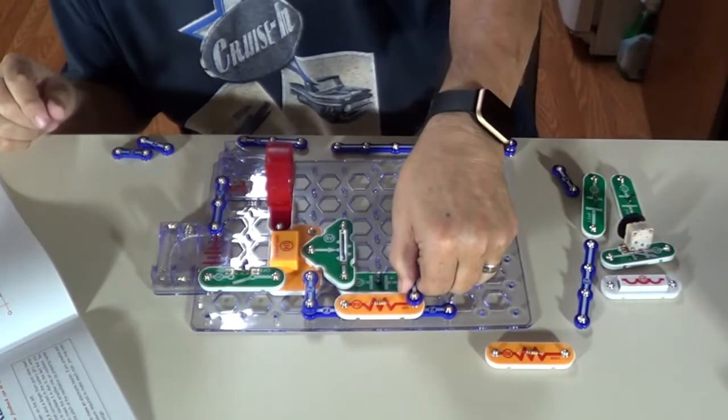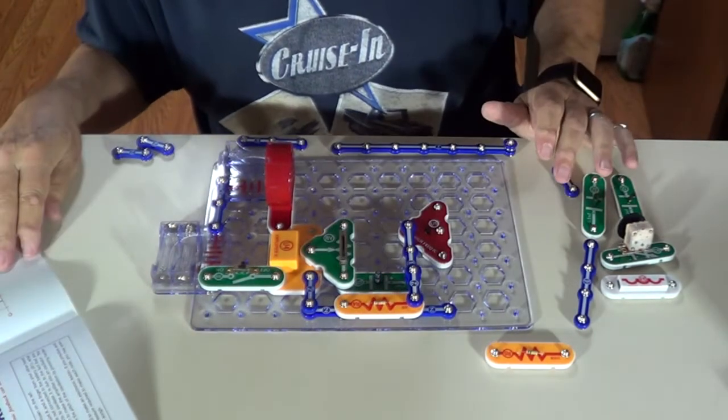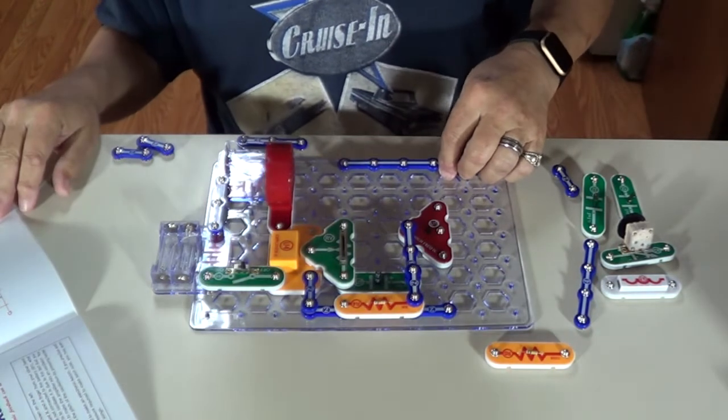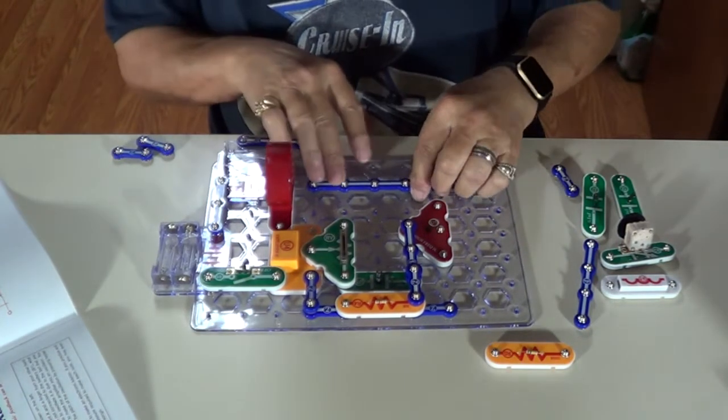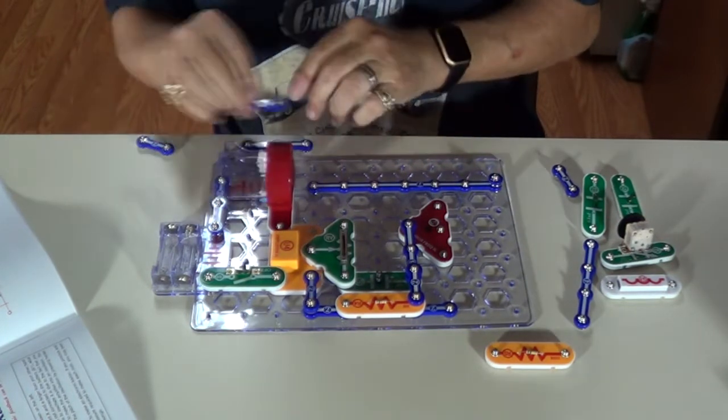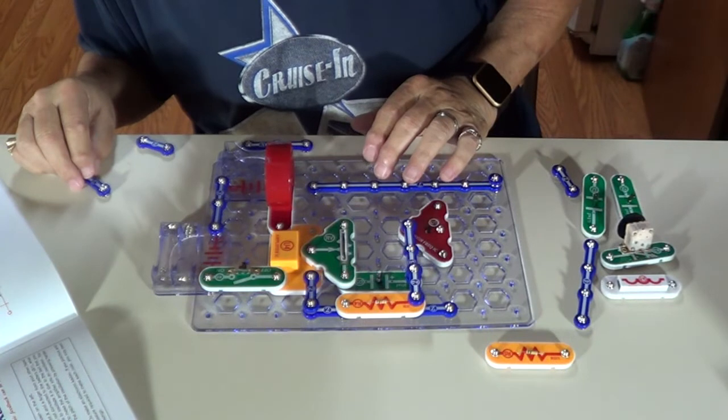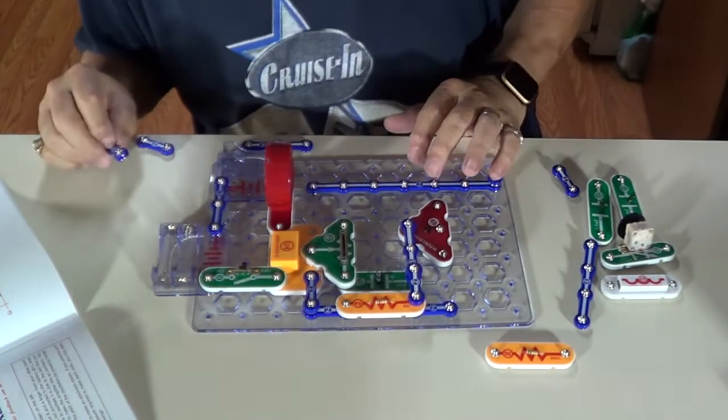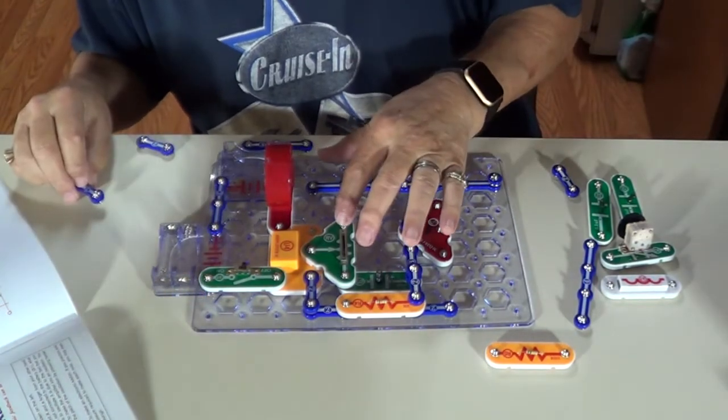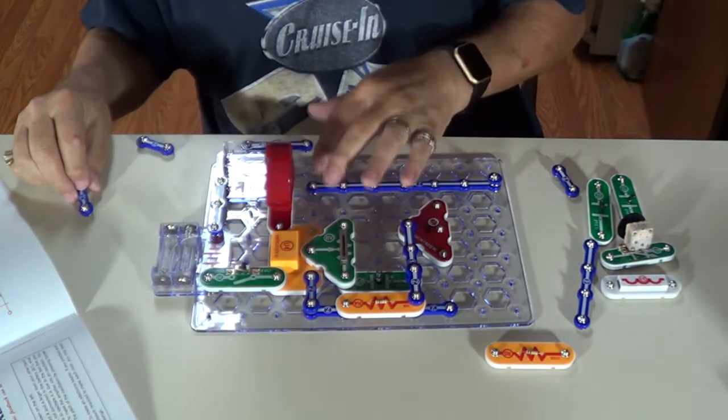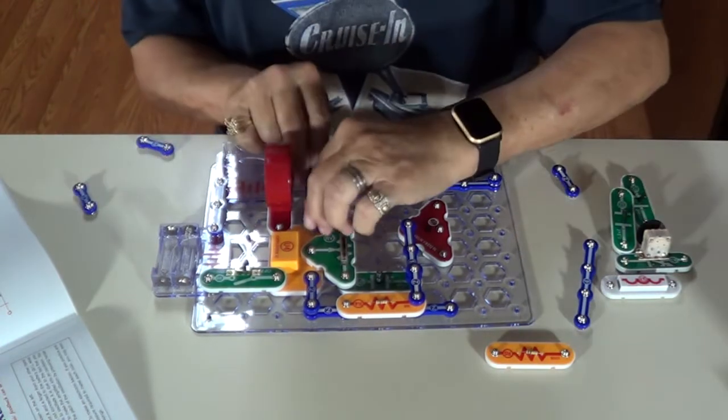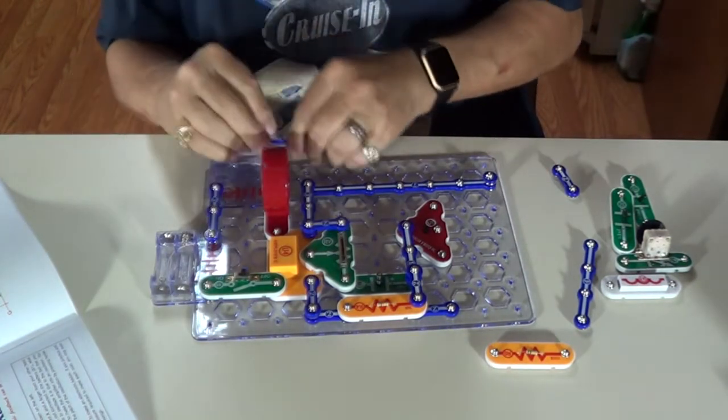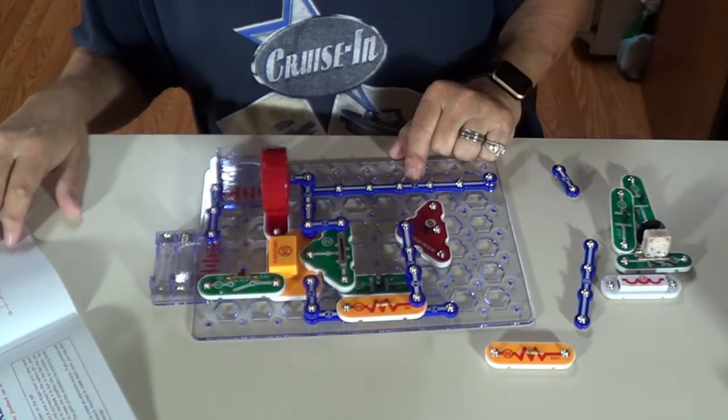Then we need a two going across to connect right there. We need a seven and a two. We need a speaker, a two, and a two. Let's see, we need a three right there, there's my three. I need a two connecting those, I need a two connecting the speaker there.